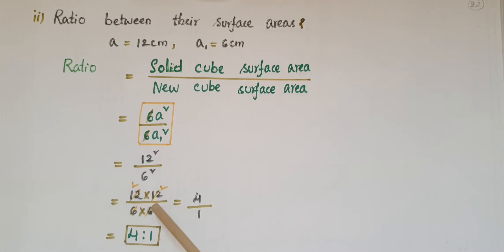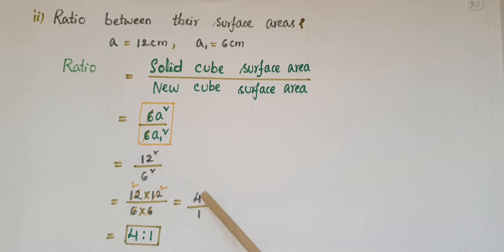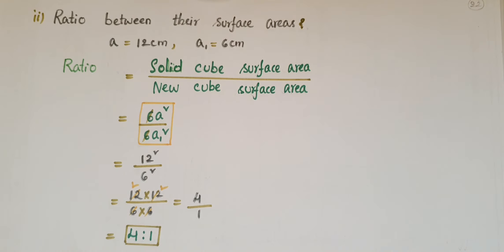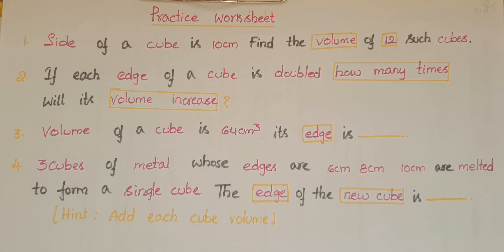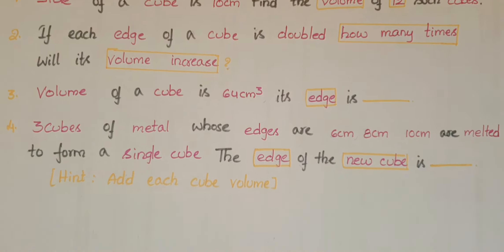That is 12 × 12 / (6 × 6). Cancelling, we get 2 × 2 = 4, so the ratio is 4 : 1. The ratio between the surface areas is equal to 4 : 1. Now please do this exercise — here are the answers.